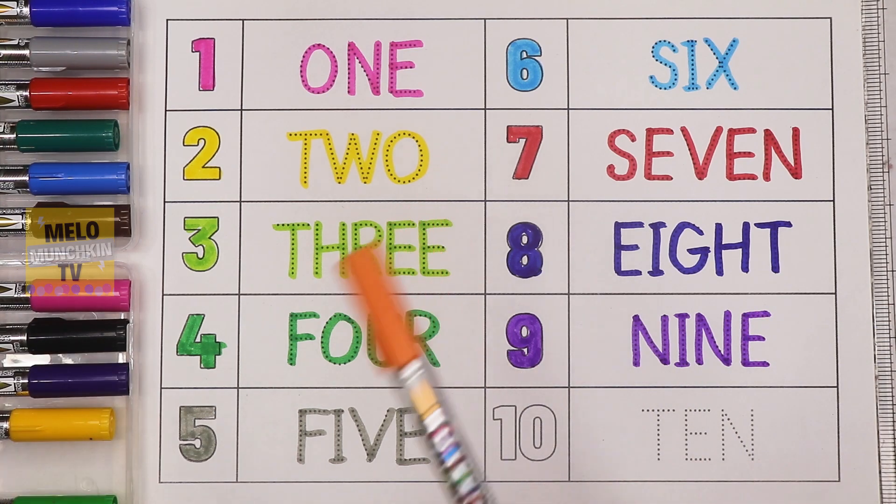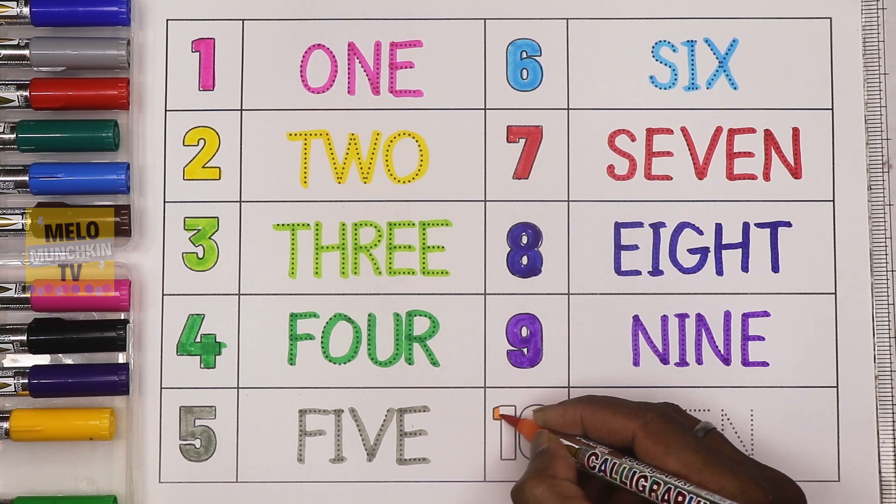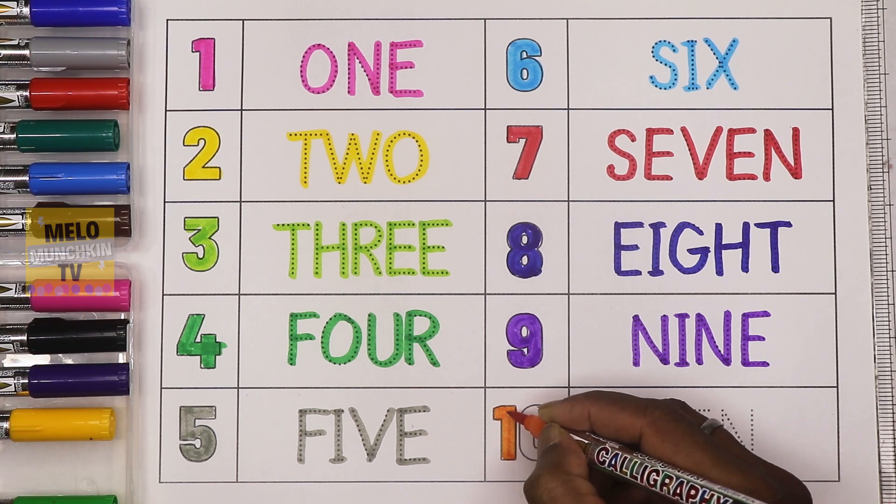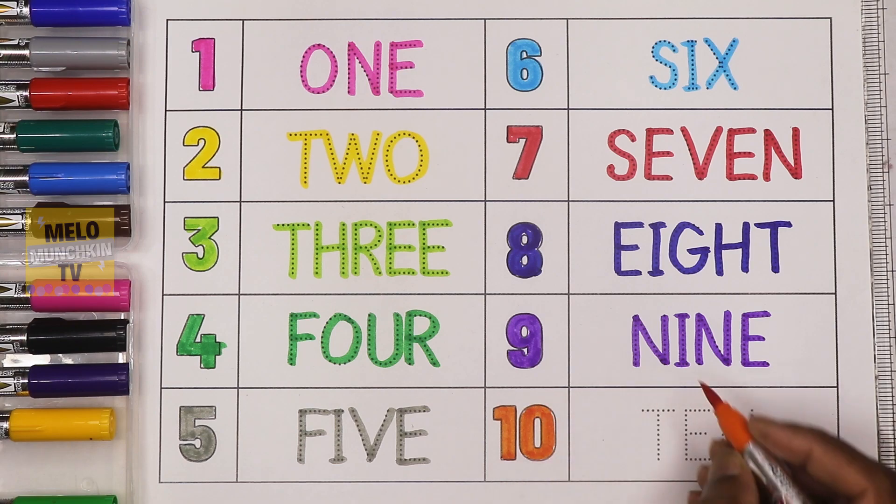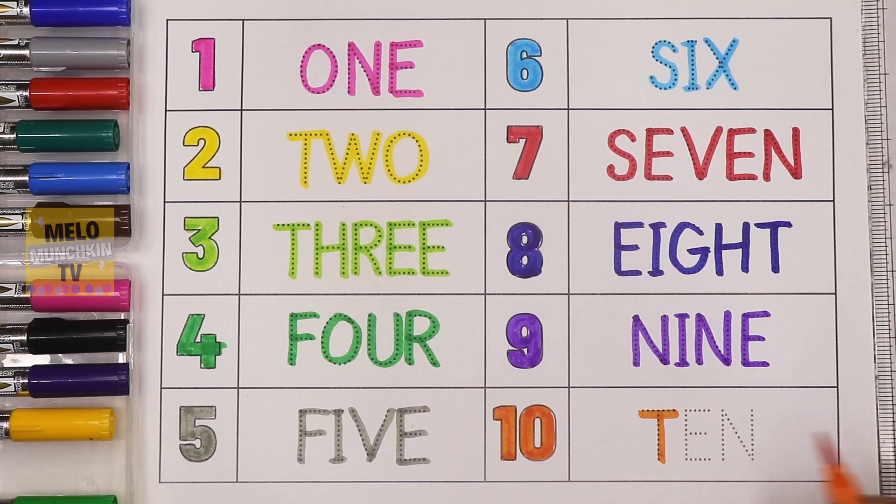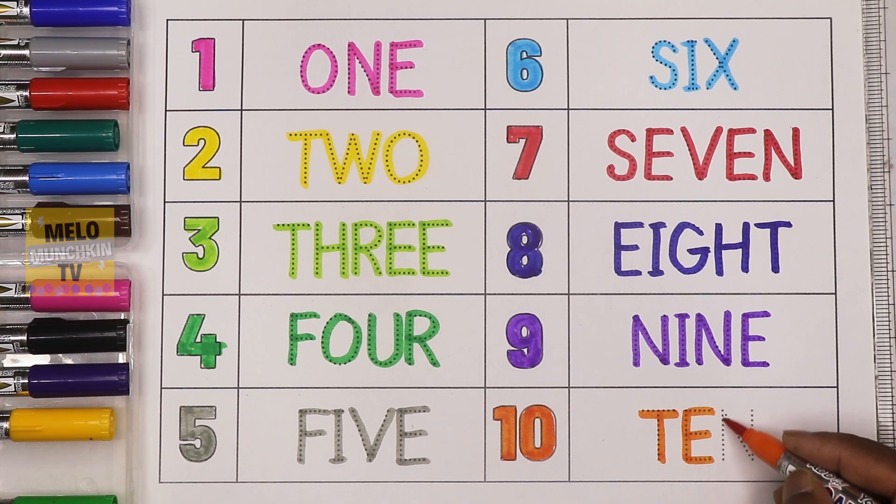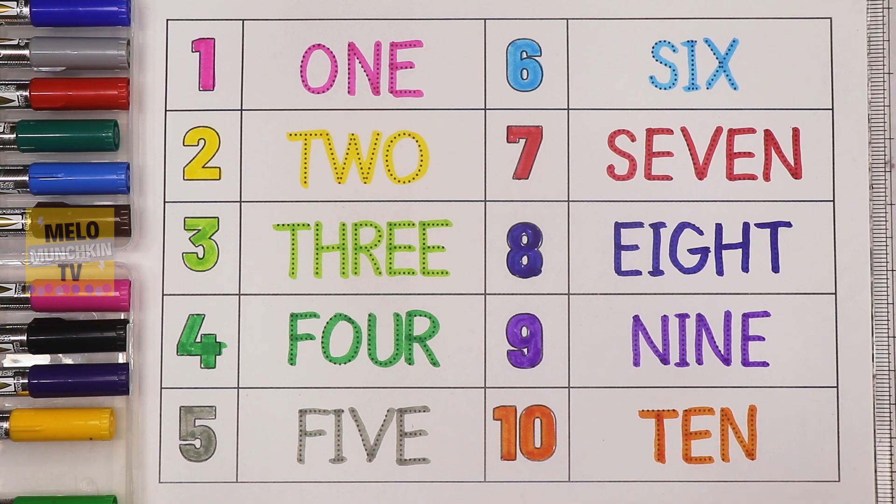Orange color. Ten. This is number ten, T-E-N, ten. This is number ten. So hence we have completed our numbers and number names. So let's repeat once again.